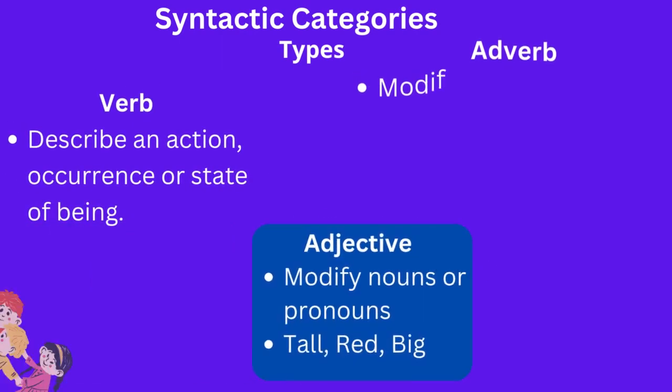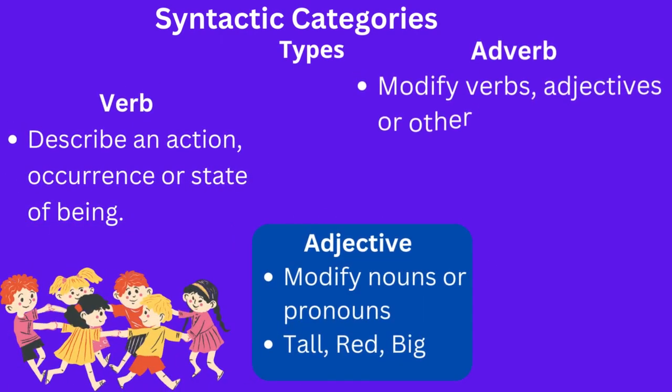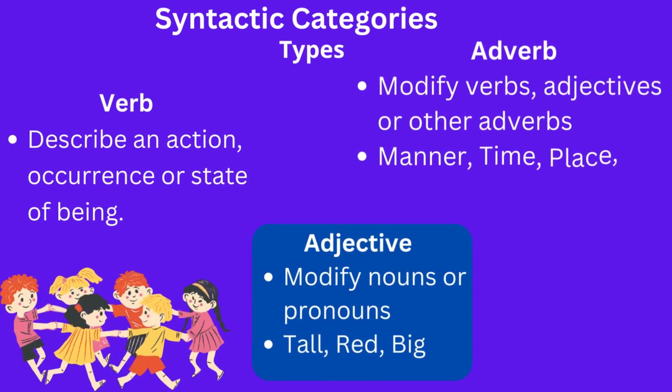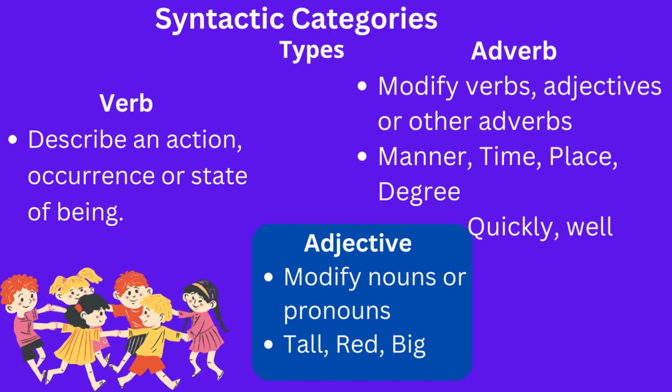The next class of syntactic categories includes verbs. Verbs are words that describe an action, occurrence, or state of being — for example, run, eat. Verbs describe the action or state of being of the subject in a sentence, serving as the heart of the predicate and typically coming after the subject. For example: 'he is running,' 'they are eating' — run and eat are examples of verbs.